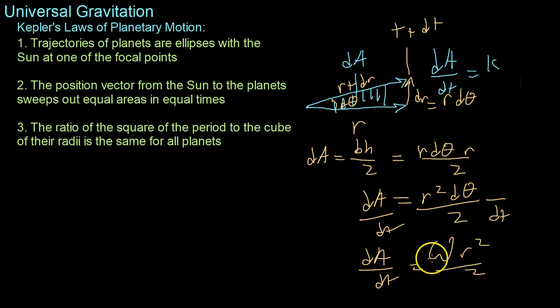But you should recognize this equation, because multiplying through by the mass, or really just mass over itself, we get that m r squared omega over 2 times the mass equals dA dt. But we know this m r squared is just the moment of inertia of a point mass, in this case the planet.